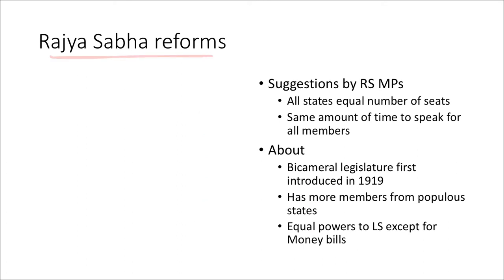The next topic is Rajya Sabha reforms. We are currently in the 215th Rajya Sabha session. Among the suggestions made are: giving all states, irrespective of their population and size, an equal number of seats in the Rajya Sabha — similar to the U.S. model of equal representation. Another suggestion is that all members, irrespective of their party strength, should get the same amount of time to speak in debates.